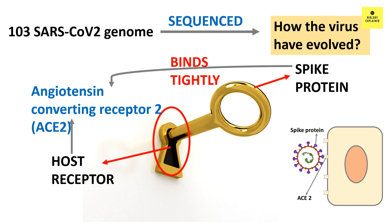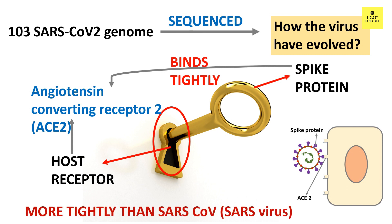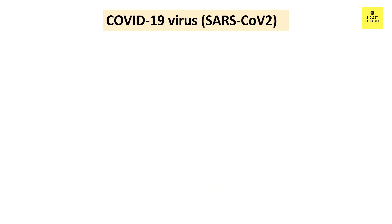We all know that SARS-CoV-2 — the coronavirus that caused the SARS epidemic back in 2003 — also binds to the cell in the same fashion. However, the recent novel coronavirus SARS-CoV-2, causing COVID-19, binds more tightly than the SARS virus. And this COVID-19 virus has been found to have undergone some mutation and evolved.